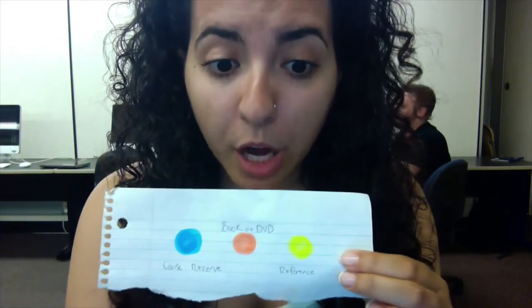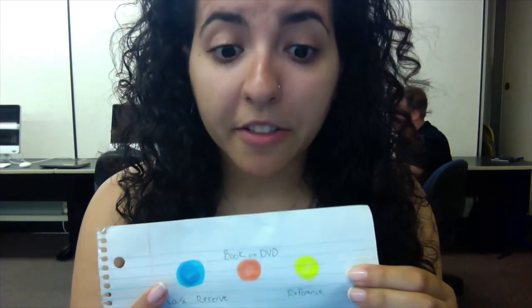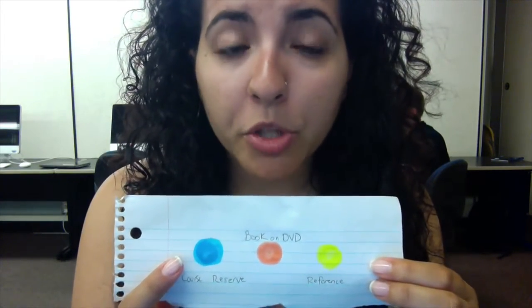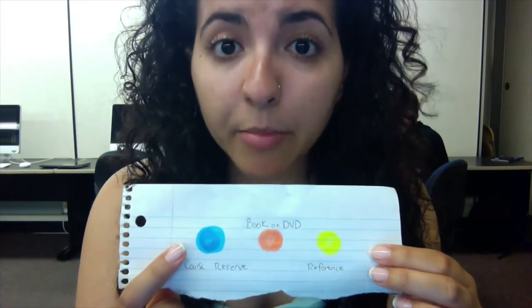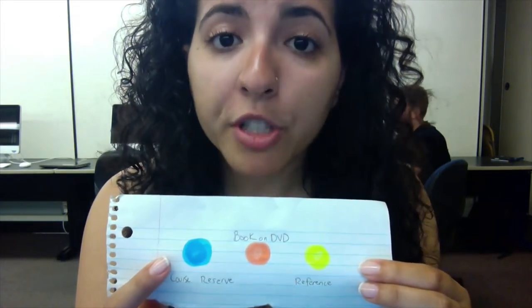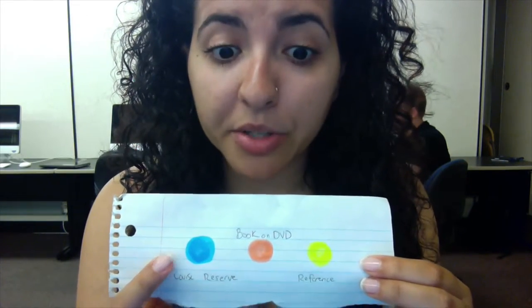Some last helpful advice for you guys is about different designations for different items that can be in the library. Those will usually be identified by different colored dots that you can find on the items you wish to take out. For example, blue dots are usually identified as books or items that are for course reserves, which a professor would put on reserve at a library for members of that course to have first-come, first-served access to those materials.